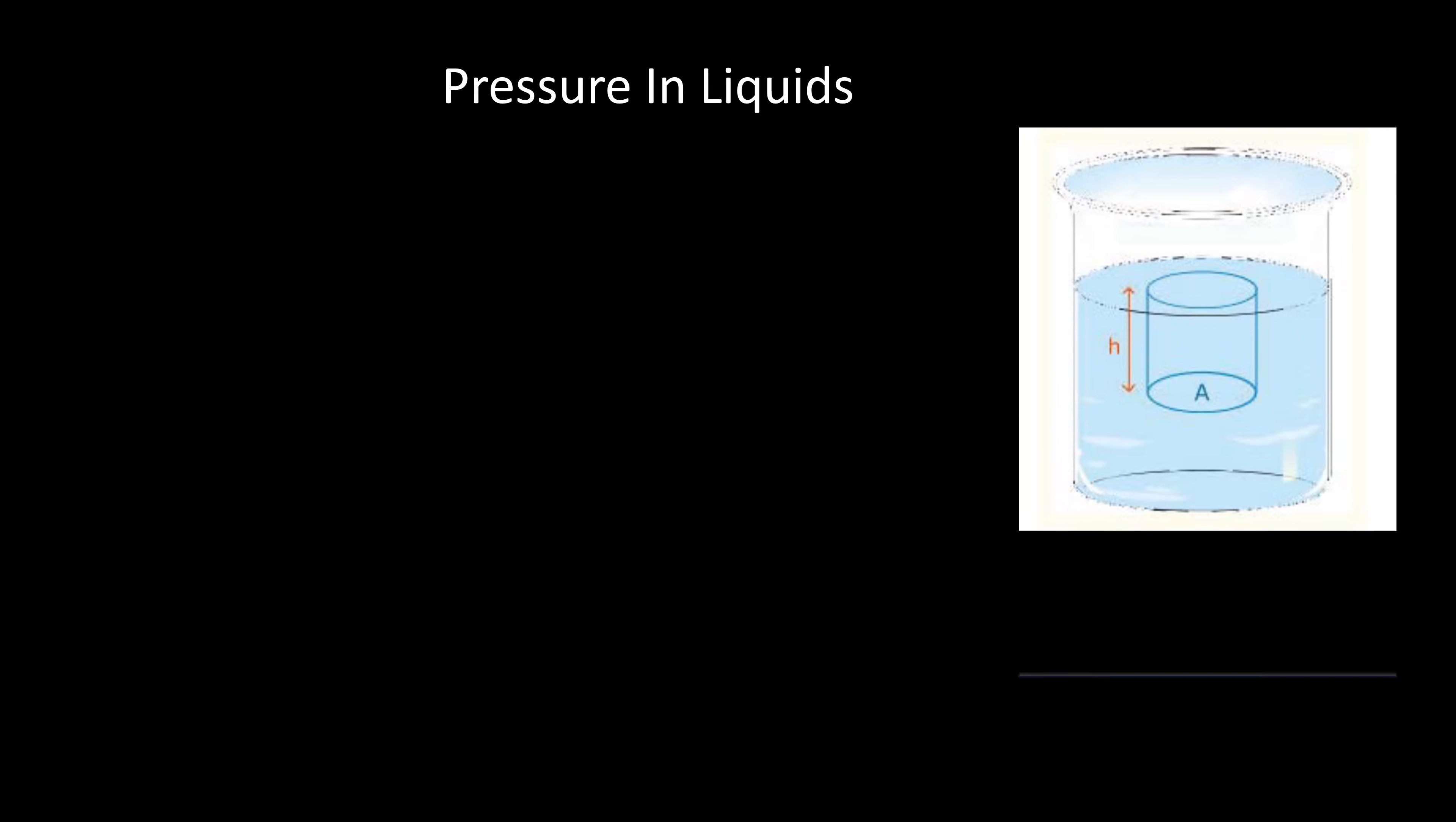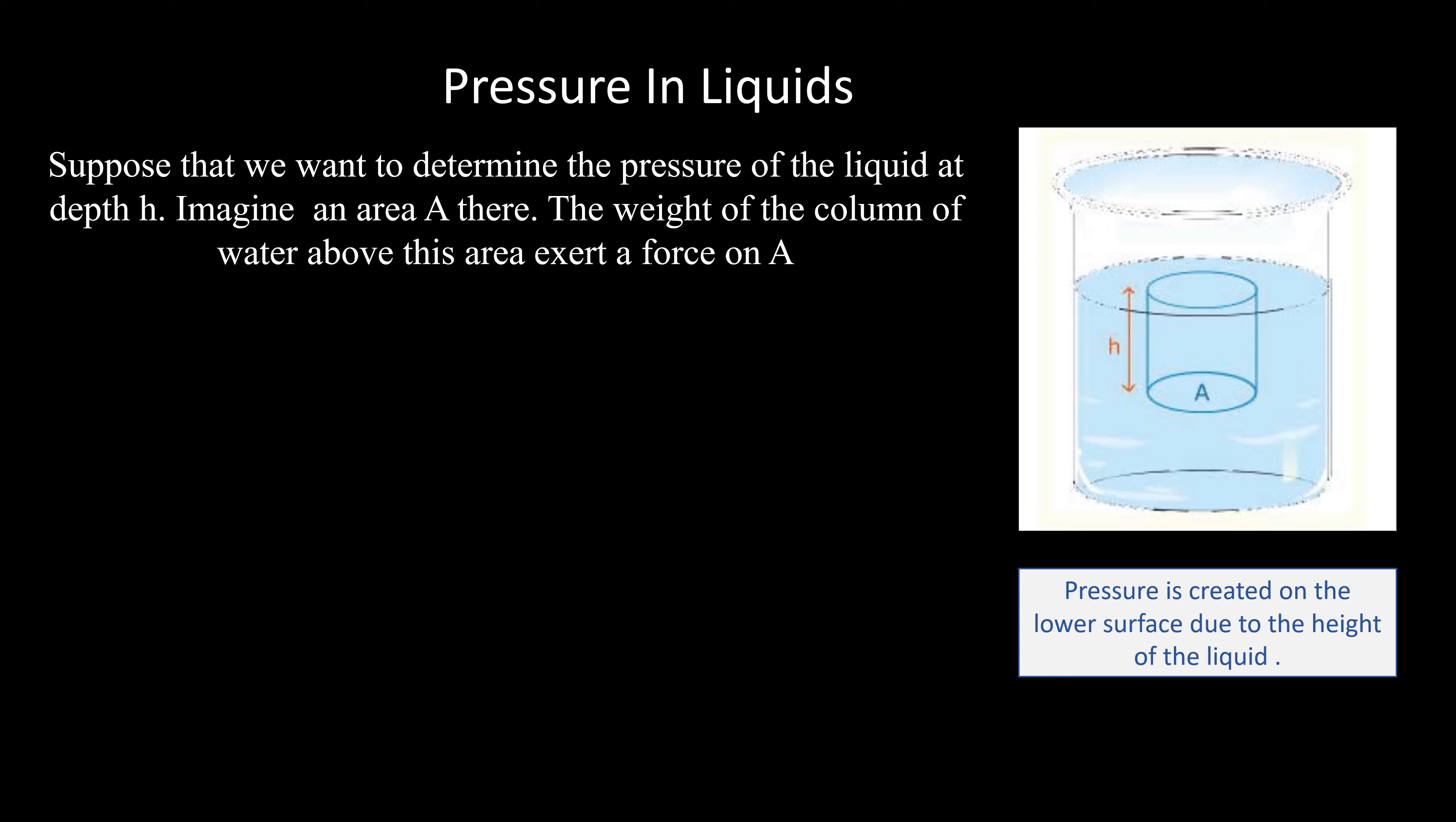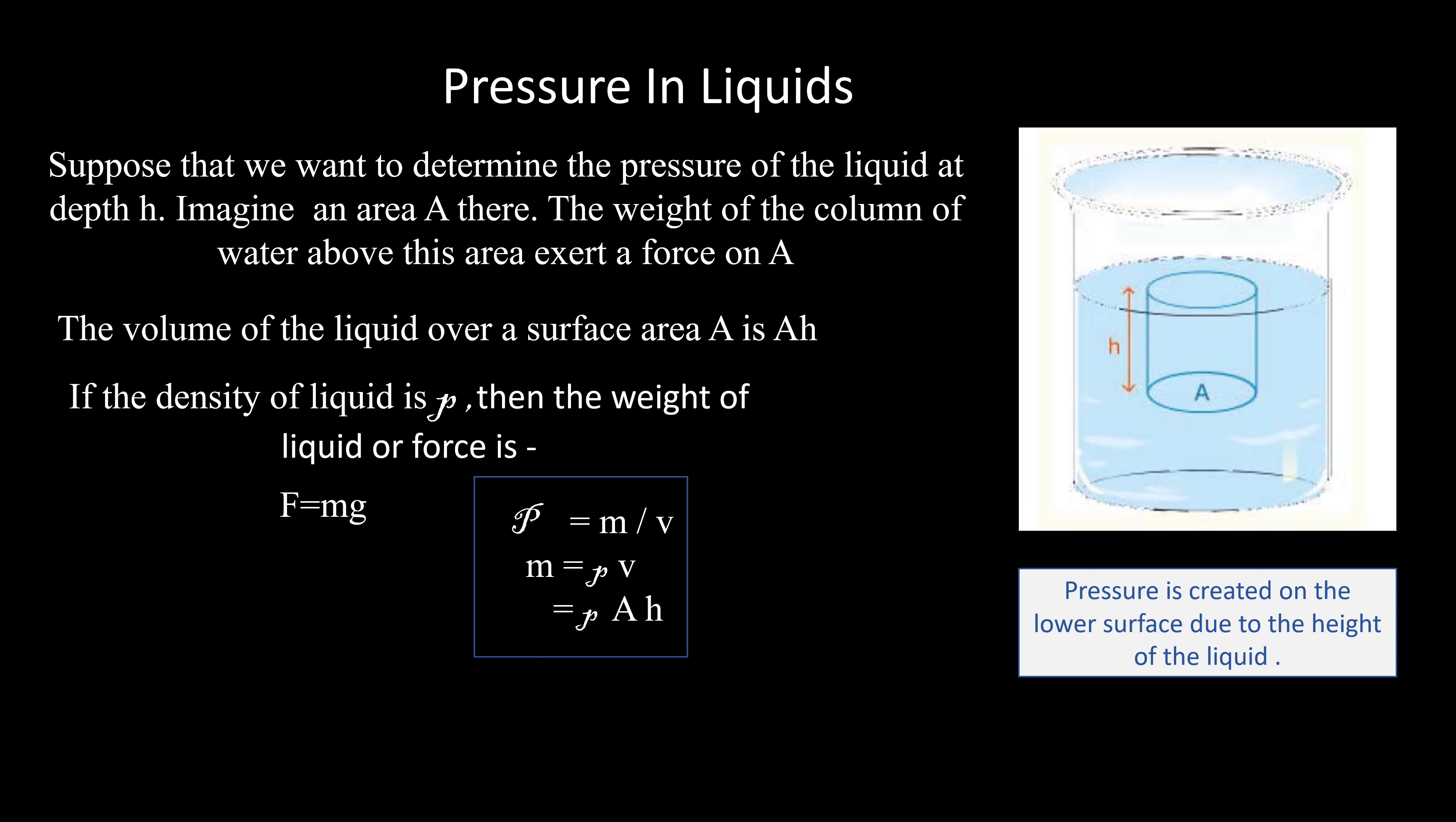Pressure in liquids. Suppose that we want to determine the pressure of the liquid at depth. Imagine an area A. The weight of the column of water above this area exerts a force on A. The pressure of the liquid over a surface area A is if the density of liquid is rho, then the weight of liquid or force F equals to mg. Here m equals to rho A h, so F equals to A h rho g.